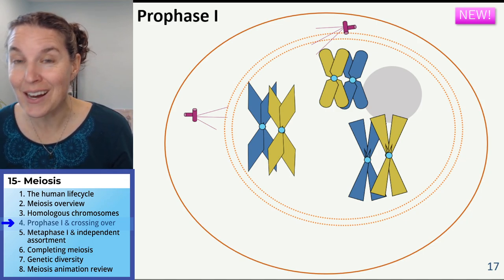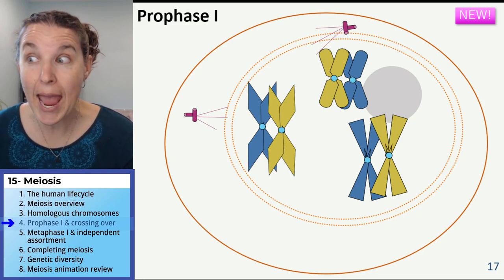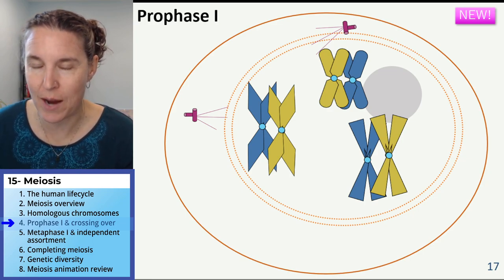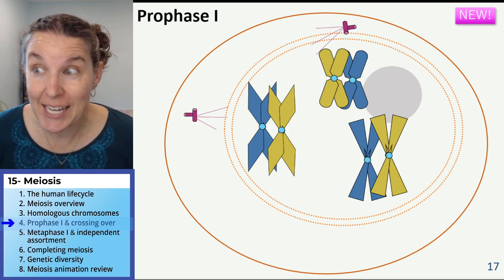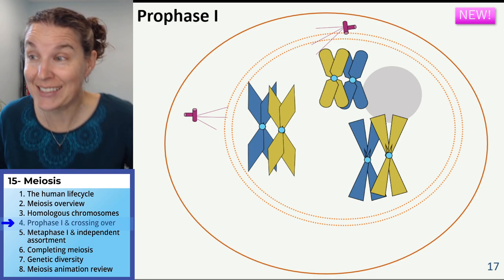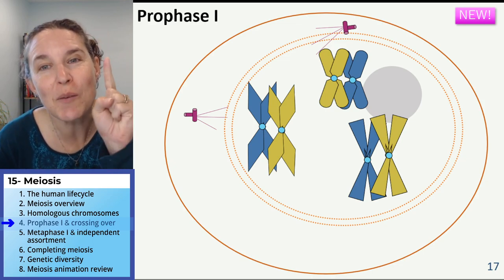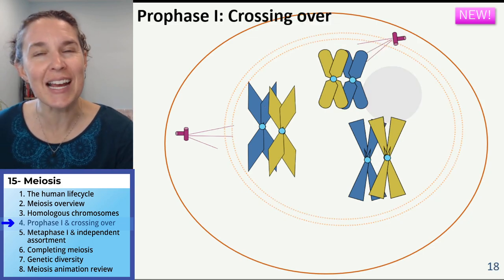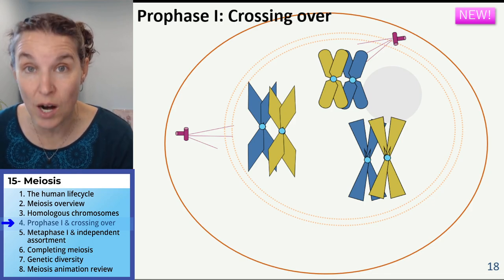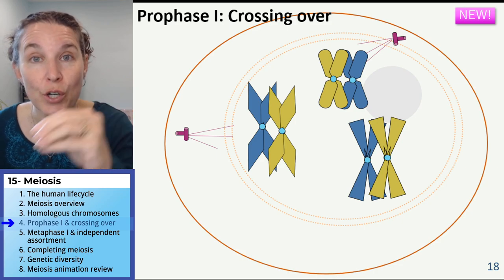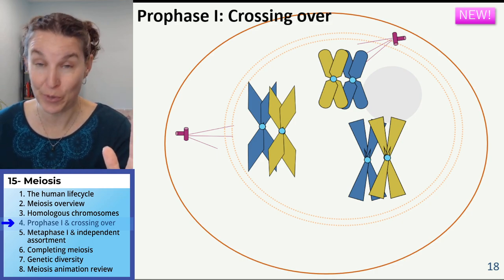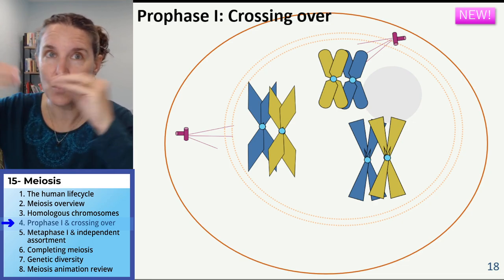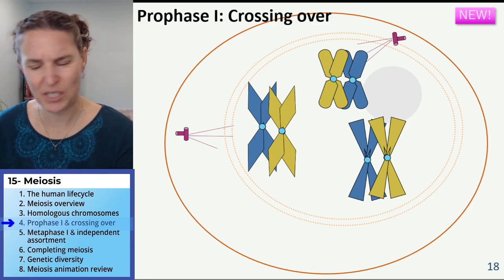The homologues are hooking up — and there's no other way to put it. The homologues hook together, they literally connect. During prophase one, because they're connected to each other, this next amazing thing can happen, which is crossing over. Write it down: crossing over occurs in prophase one. Can you predict what crossing over might be? We're talking about homologues that just hooked up.